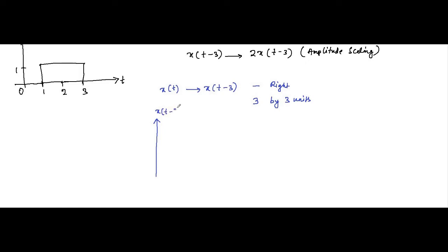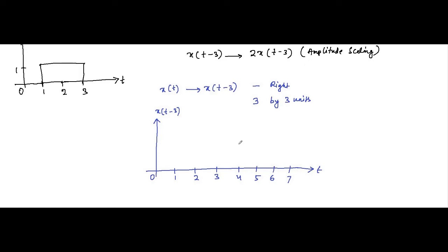The shifted signal x(t-3) will be plotted on the time axis from 4 to 6. On both ends of the signal, simply add 3: 1 plus 3 is 4, and 3 plus 3 is 6. So the time-shifted signal spans from 4 to 6. This is the time shifting operation — the first operation performed.